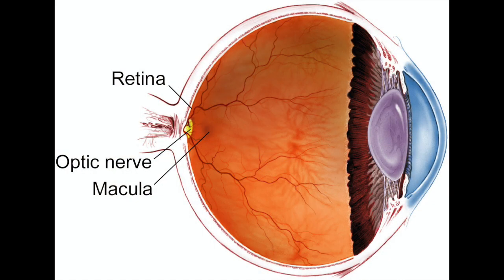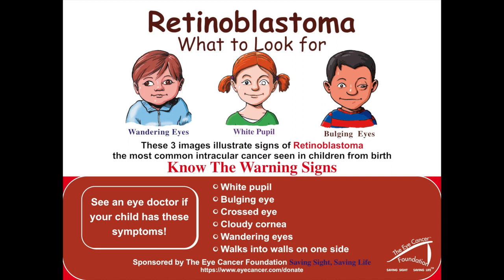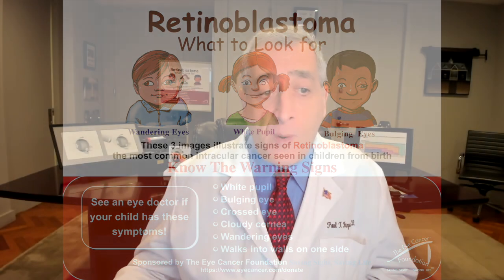Retinoblastoma is the most common eye cancer in children. It begins inside the eye in a tissue called the retina. The retina is like the film in your ocular camera. As you can see in this poster, children may look like they have a white pupil called leukocoria, a crossed eye called strabismus, or a bulging eye called buphthalmos. These posters can be downloaded for free from the Eye Cancer Foundation's website, eyecancercure.com.